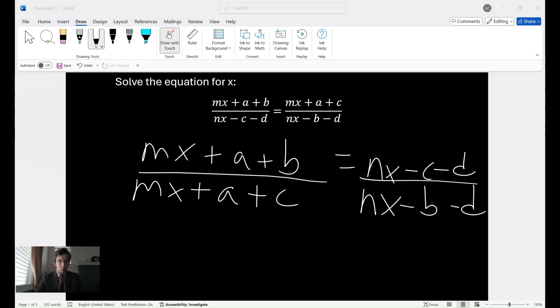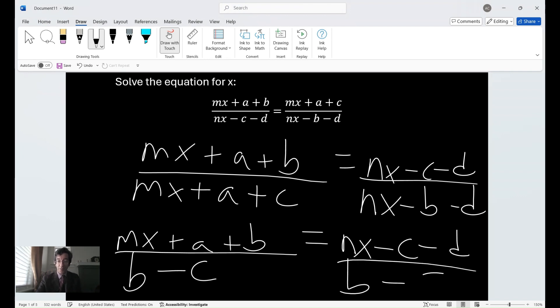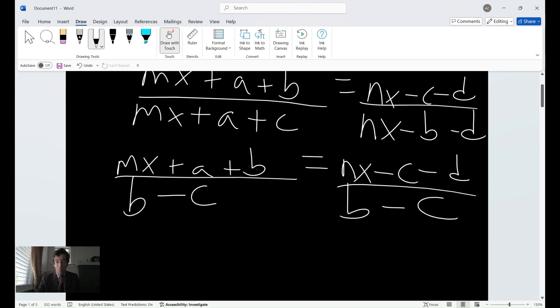All right, now, using one of the other properties, we can now retain the numerators. But if we take the differences for the new denominators, we're going to have the following. We're going to have m x plus a plus b. And we are left with if we take the differences. For taking the differences for the new denominators, we actually get we end up with b minus c. So now we have b minus c on both sides. And of course, the second numerator is going to be n x minus c minus d. Divided by b minus c.